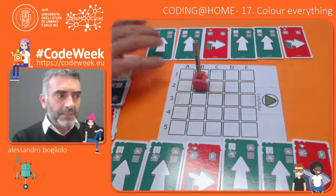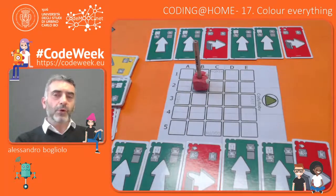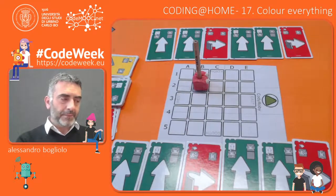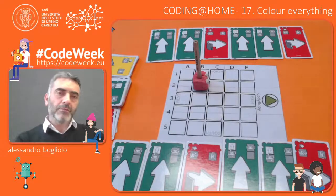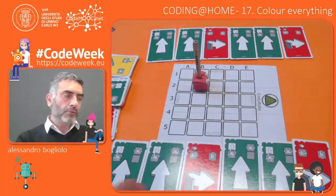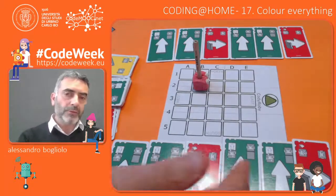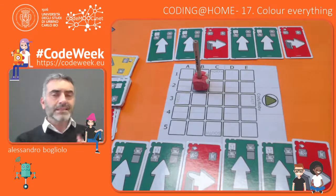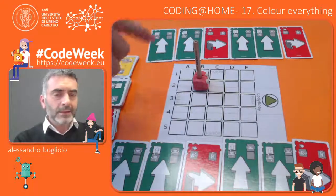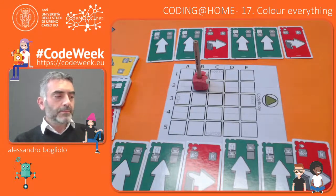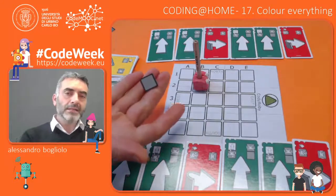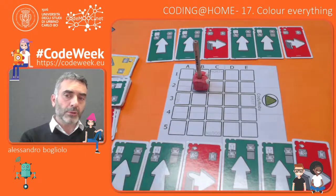Let's start from the same program that we wrote last time. You see: move forward, move forward, right, move forward, move forward, right, forward, forward, right, forward, forward, right. But this time, while executing the program, I will place grey tiles behind the robot to represent its tracks.